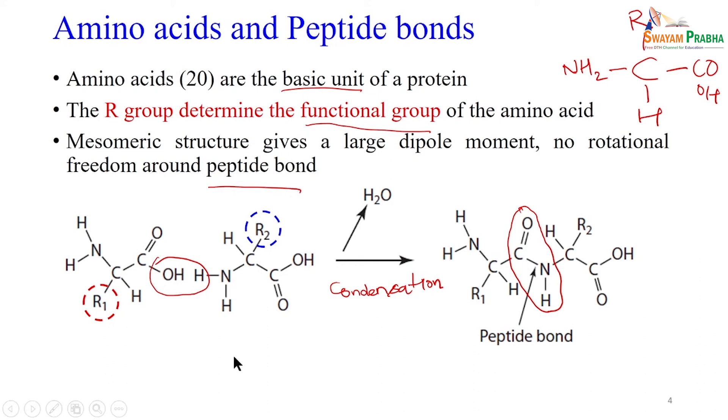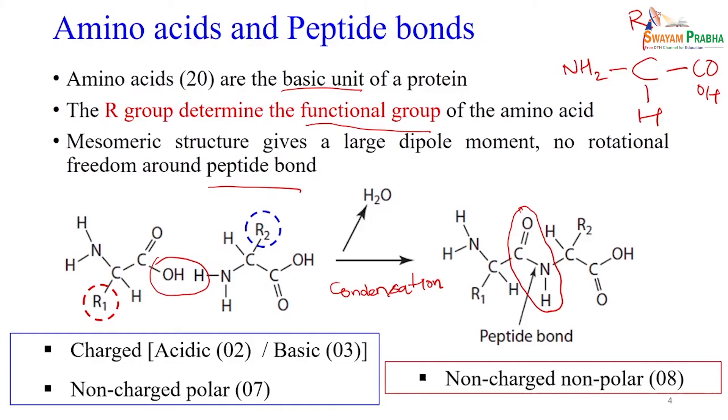From these 20 amino acids there can be dipeptide, tripeptide, pentapeptide and so on. A particular protein may have 20, 100, or a few hundred amino acids. In total we have 20 amino acids: 2 acidic (negatively charged), 3 basic (positively charged), and 7 non-charged polar amino acids.